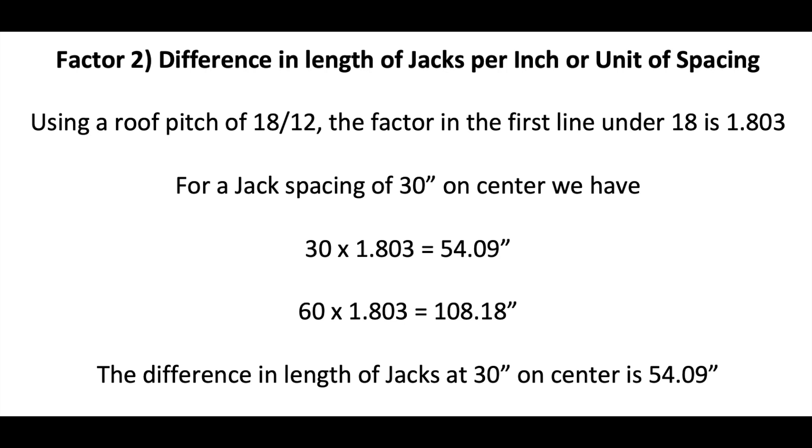Jack number 1, 30 times 1.803 is equal to 54.09 inches. Jack number 2, 60 times 1.803 is equal to 108.18 inches. As we see, the first jack is exactly half the length of the second, therefore the difference in length of the jacks at 30 inch spacing for this pitch is 54.09 inches.